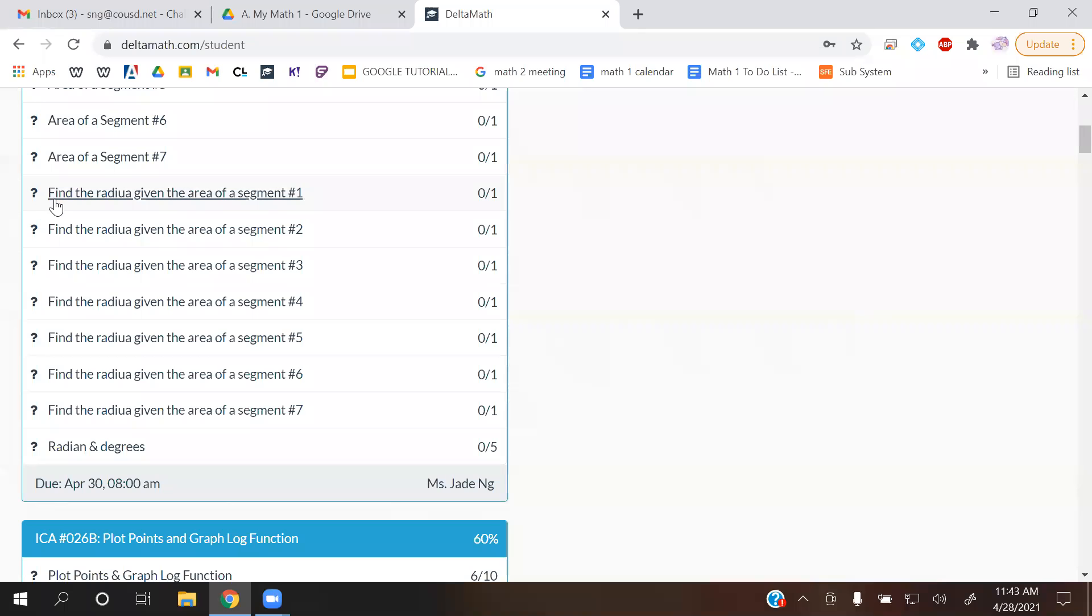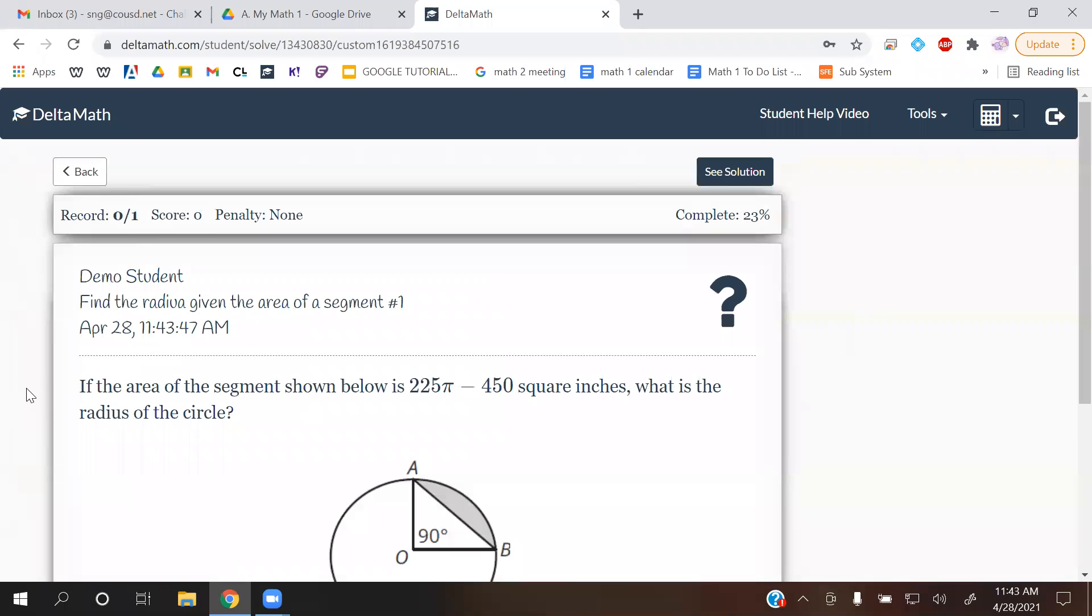Alright, so this next category is find the radius given the area of a segment number one. So that's pretty much the radius. I don't know if that's a typo or not, but essentially we're just finding the radius.